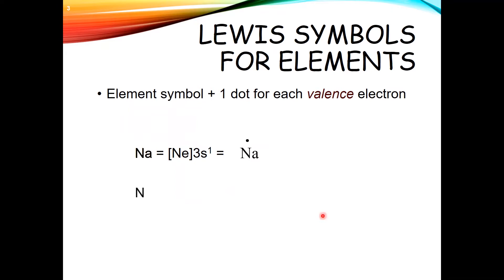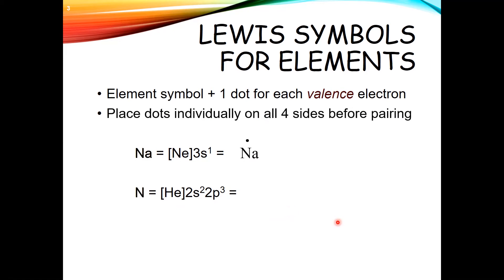When it does start to matter is when you have more than four electrons. For example, nitrogen has an electron configuration equal to that of helium plus two 2s electrons and three 2p electrons, so it has a total of five valence electrons. What we're going to do is put a dot on each side of nitrogen first, and then add our last dot to one of the sides. You can just go clockwise around this — it doesn't really matter what side you start on. By doing that, we've put unpaired electrons out here as well.